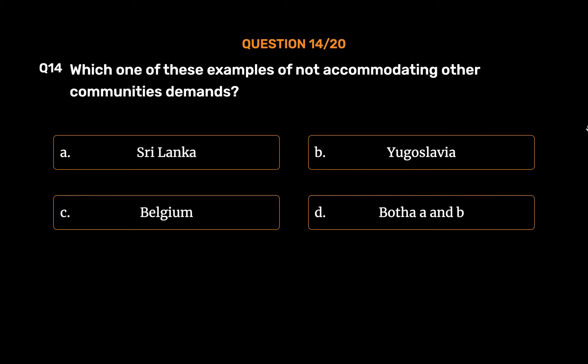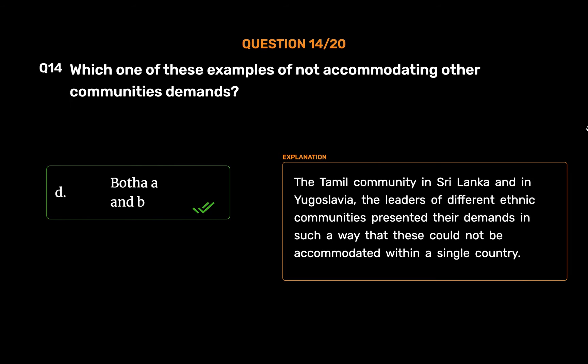The correct answer is Option D: Both A and B. The Tamil community in Sri Lanka and in Yugoslavia, the leaders of different ethnic communities presented their demands in such a way that these could not be accommodated within a single country.